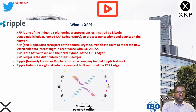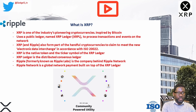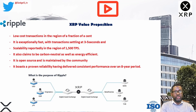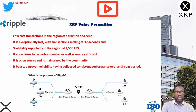On to XRP's value proposition: it offers low-cost transactions in the region of a fraction of a cent. It is exceptionally fast, with transactions settling in 3 to 5 seconds, and scalability is reportedly around 1,500 transactions per second. XRP also claims to be carbon neutral and energy efficient. It is open source and maintained by the community, and it boasts proven reliability having delivered consistent performance over the past 8 years or so.